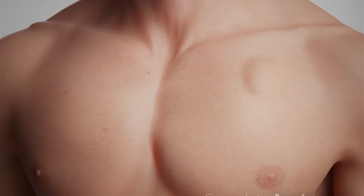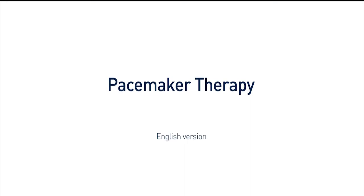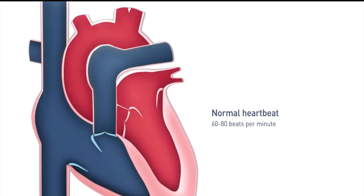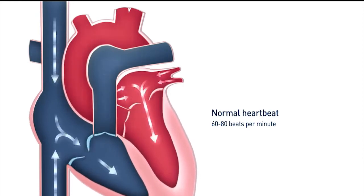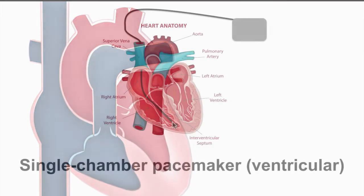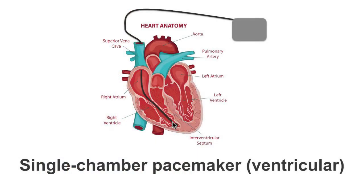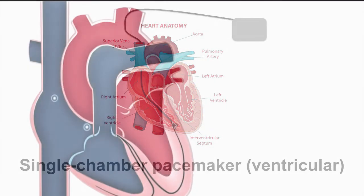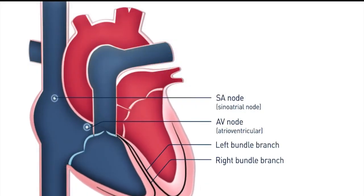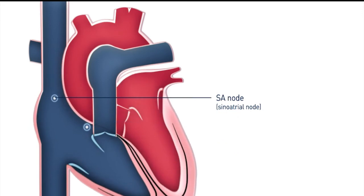Implanting a pacemaker in your chest requires a surgical procedure. Depending on your condition, you might have one of the following types of pacemakers. Single Chamber Pacemaker: this type usually carries electrical impulses to the right ventricle of your heart.